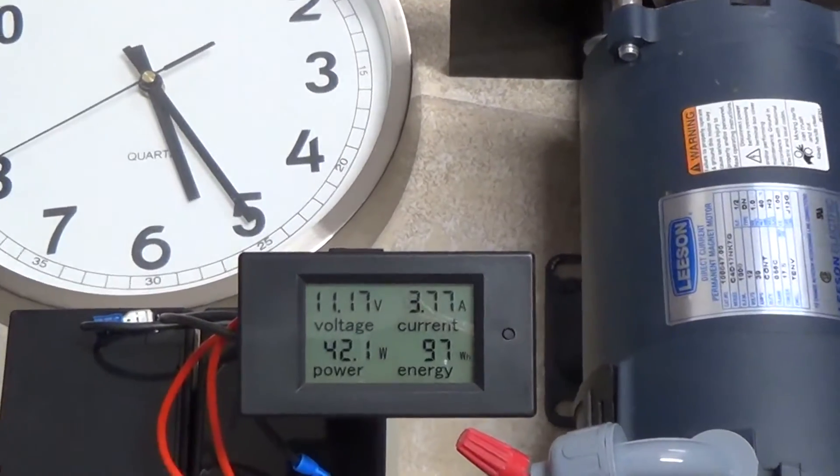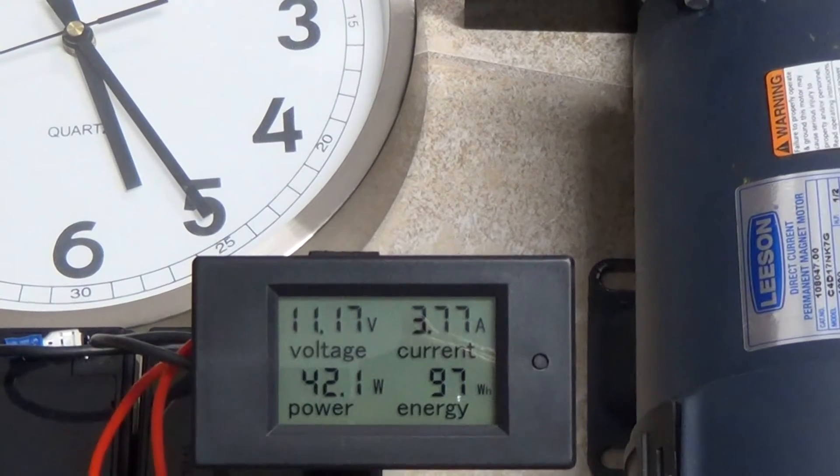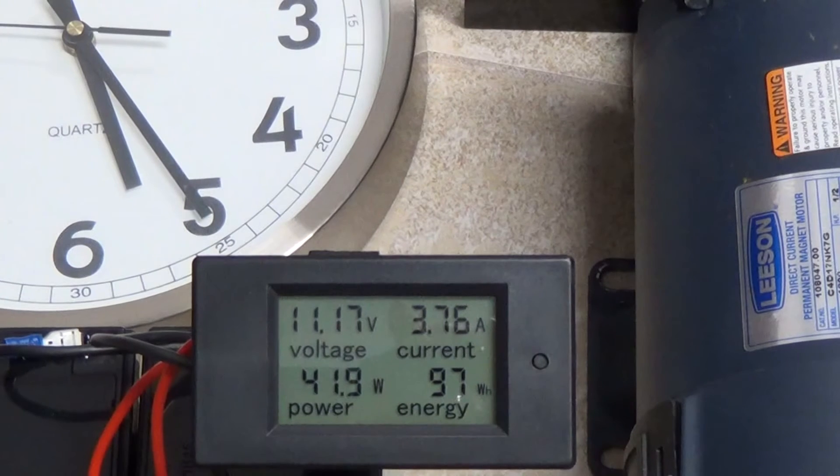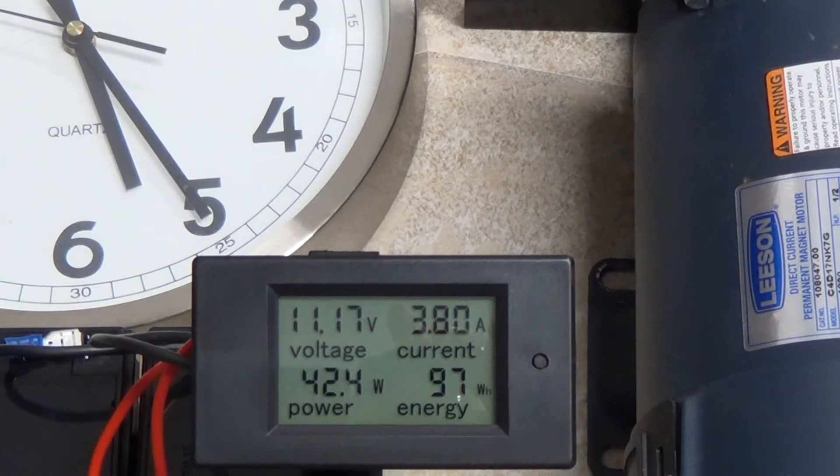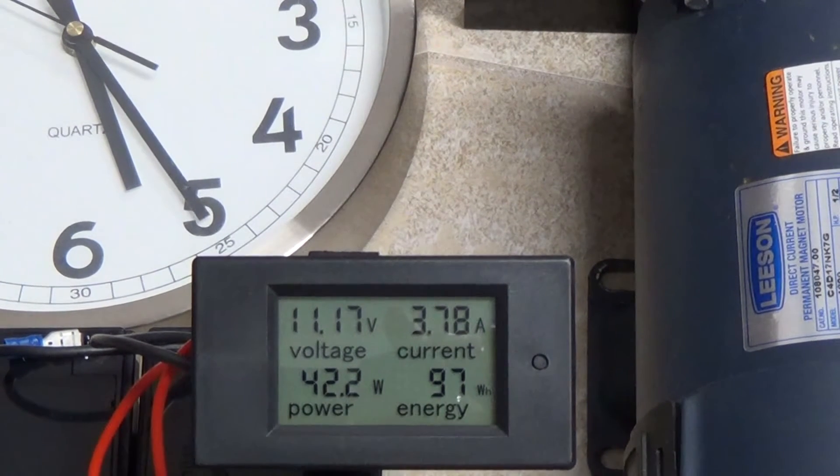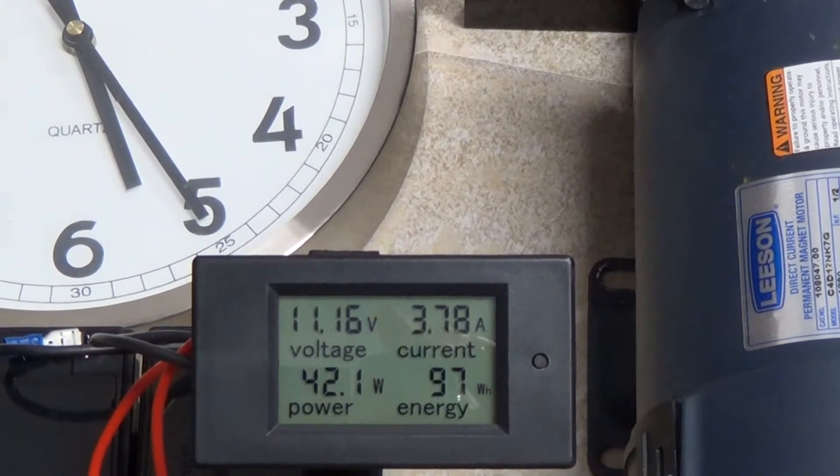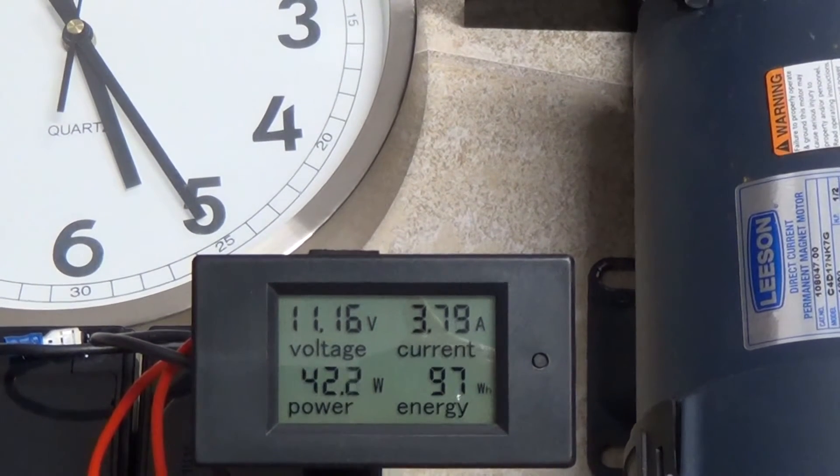So now we definitely have hit the two hour mark, and we're at about 97 watt hours used. What I'm going to do is I'm going to stop it at exactly 100 watt hours. That should be good enough. The recovery of the voltage may be, or at best, it'll go up to 12 volts. So that would mean they would be fully discharged.